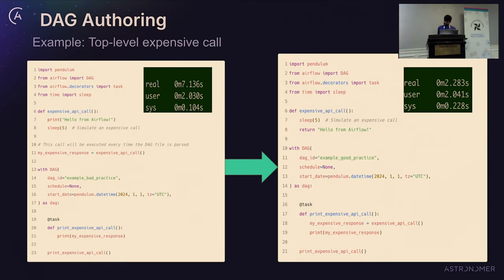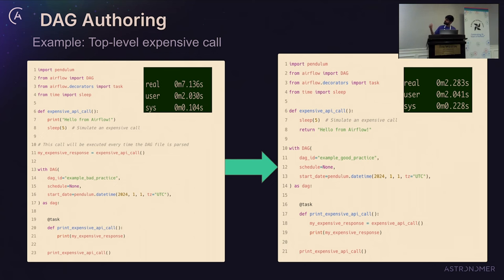Here is one example of a top-level import. In line number 11, we are making a call to an expensive API call function. Since this call is top-level, whenever Airflow tries to parse the DAG, it will always call that expensive API call function. The DAG parsing time comes to around seven seconds. On the other hand, if we just move that expensive call inside the Taskflow API, the time reduces to two seconds — which is significant. At scale, this is very important.